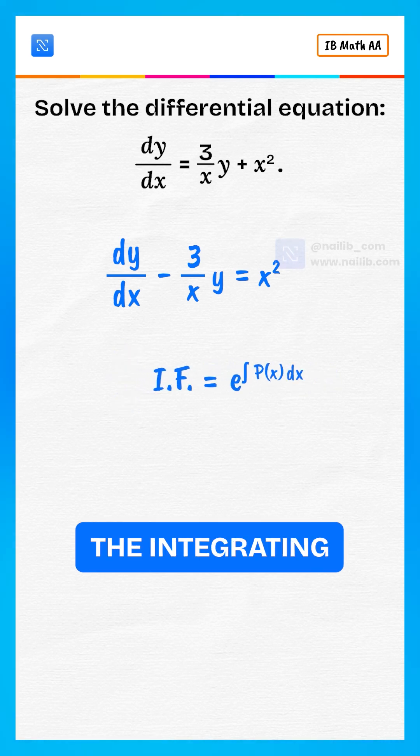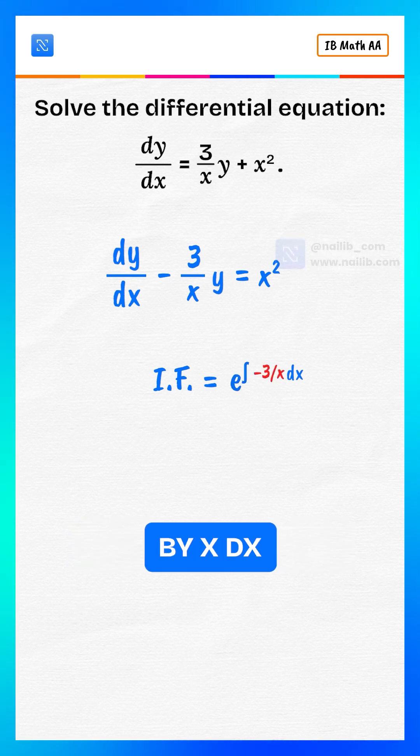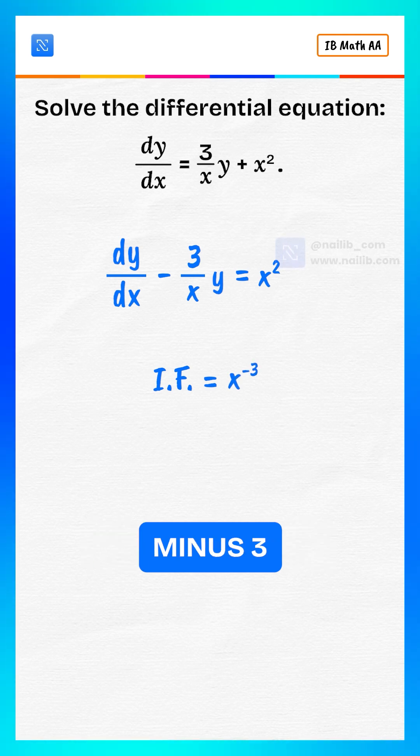Now we find the integrating factor. Substitute the values, which is e raised to the integral of -3/x dx. This simplifies to x^(-3).